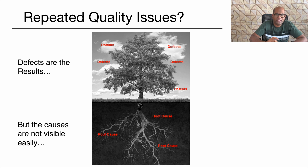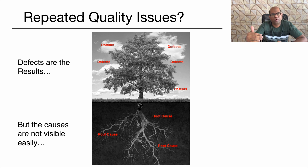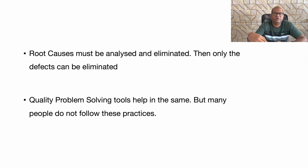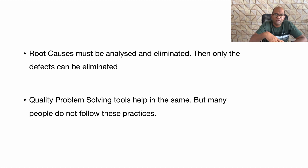In lean we talk about five why analysis — understanding the first why, then asking the question again going to the next why, and then the next. Research shows that most of the time the fifth why is the real reason for the particular defect, and we have to solve the fifth why to avoid that defect. In many companies, people stop at the first or the second why and don't go to the fifth — that is the reason the same problems come again and again.